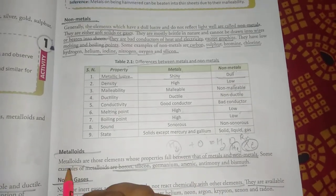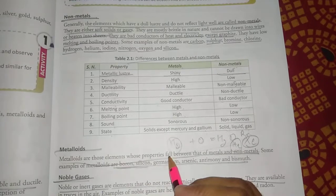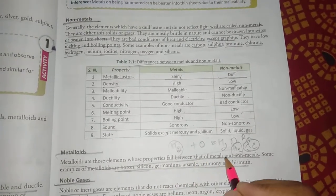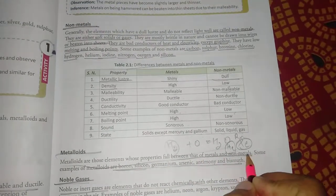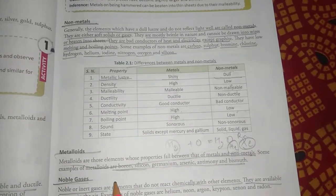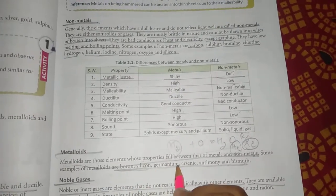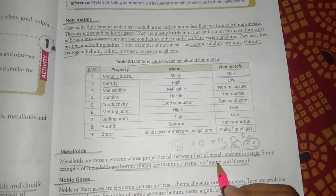Now the definition of metalloids. Metalloids are those elements whose properties fall between that of metals and non-metals. Examples include boron, silicon, germanium, arsenic, antimony, and tellurium.